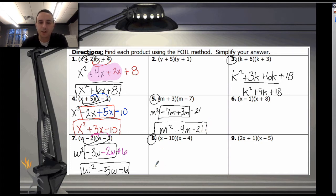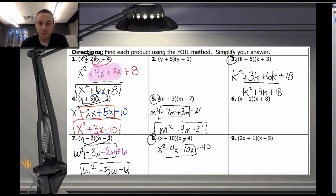For number 8: x times x is x squared; x times negative 4 is negative 4x; negative 10 times x is negative 10x; and negative 10 times negative 4 is positive 40. Combining those two like terms gives x squared minus 14x plus 40.